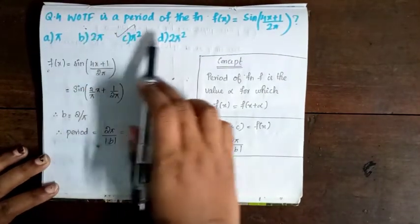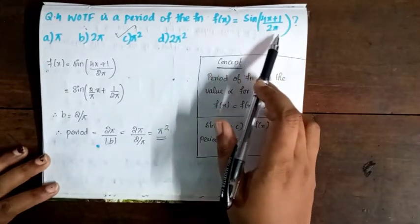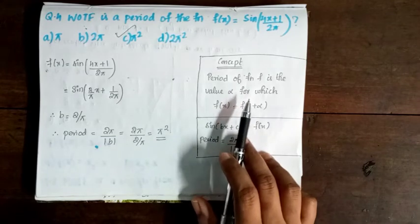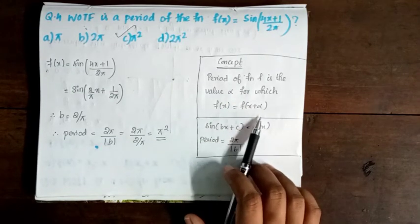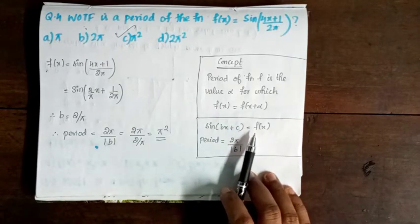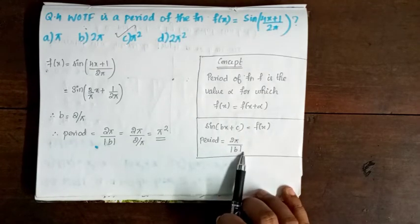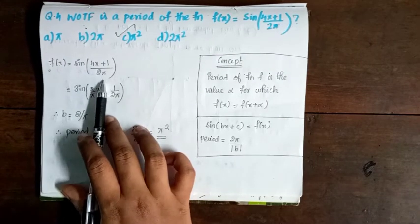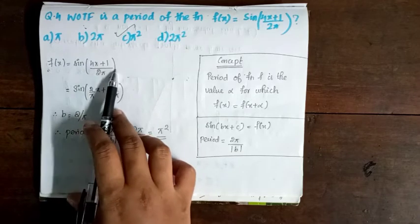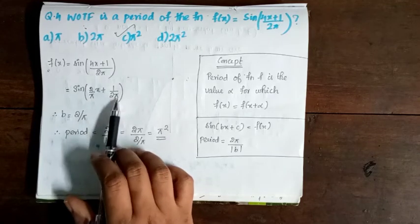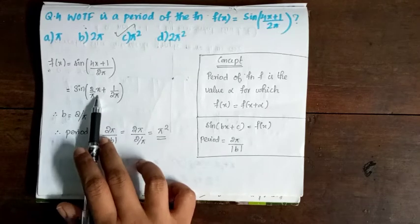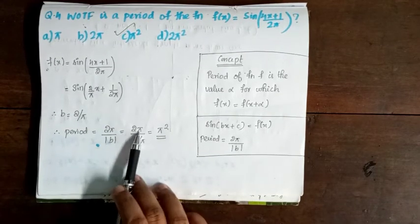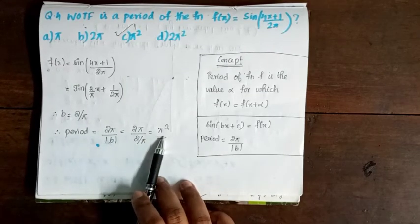Question 4: Which of the following is the period of the function f(x) = sin(4x + 1/2π)? The period of f(x) = sin(bx + c) is 2π/|b|. Here the function is f(x) = sin((2π/π)x + 1/2π), so the coefficient b = 2π/π. Therefore, the period is 2π divided by (2π/π), which equals π². Option C is correct.